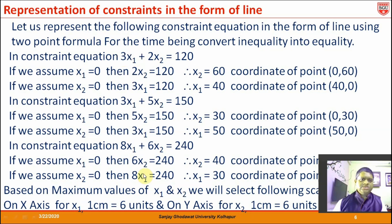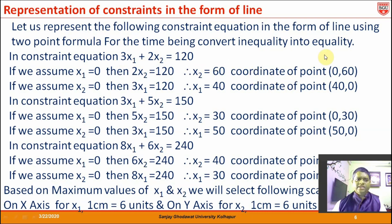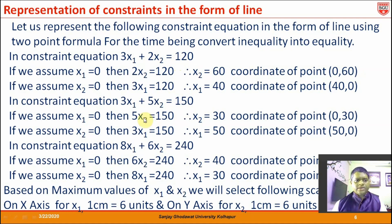In this question, three constraint equations are given. The first is 3x1 + 2x2 ≤ 120. We need to identify two points lying on this line so the equation can be represented as a line. The simplest method is to first assume x1 = 0 to get the coordinate of x2, then assume x2 = 0 to get the coordinate of x1, giving us two points on the line. We follow the same method for the other constraint equations.